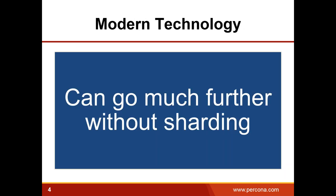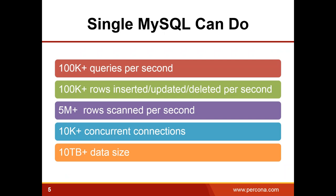Second, you need to understand that with modern technology you can go much further without sharding than you could five years ago. We get hardware advances; MySQL and the operating system are much better. A single MySQL instance can do quite a lot — more than 100,000 queries per second, write or modify more than 100,000 rows per second, scan more than 5 million rows, and so on. These are not peak benchmark numbers; they are actually pretty modest. Recent Oracle benchmarks on big iron push close to 700,000 queries per second.